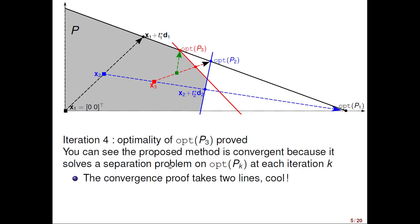At the last iteration, in green, the projection algorithm can certify that opt P3 is optimal. And actually, the contact point becomes equal to the optimal solution, opt P3 of the outer approximation. So, the method converges.